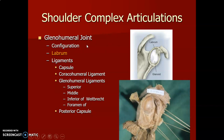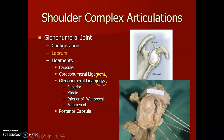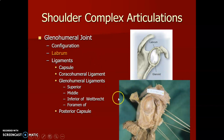The glenohumeral joint is formed between the head of the humerus and the glenoid cavity of the scapula. The cavity is deepened by a fibrocartilaginous labrum around it. We have ligaments in the capsule and in the joint: the coracohumeral ligament and the glenohumeral ligament, which has three parts — superior, middle, and inferior glenohumeral ligament.